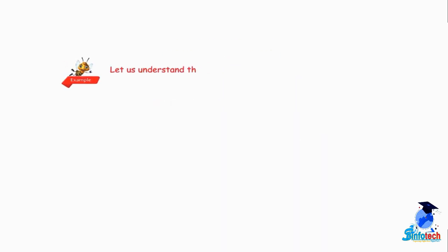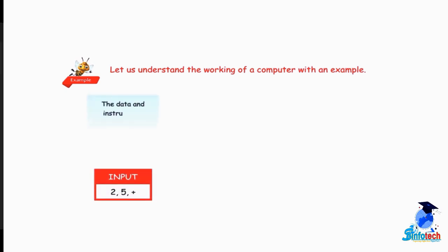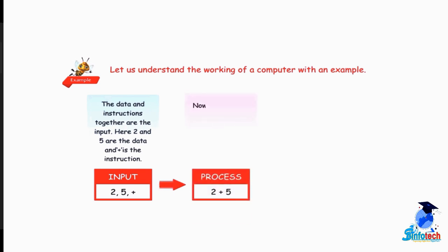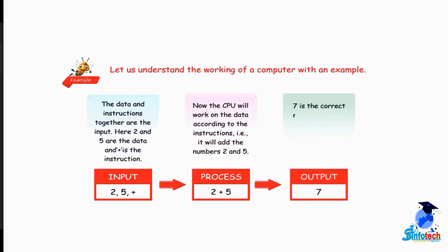Let us understand the working of a computer with an example. The data and instructions together are the input. Here, 2 and 5 are the data and plus is the instruction. The CPU will work on the data according to the instructions — it will add the numbers 2 and 5. 7 is the correct result or output. Input: 2, 5 plus. Process: 2 plus 5. Output: 7.